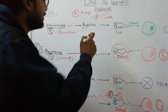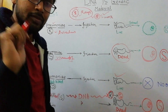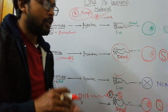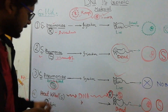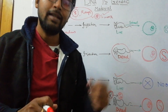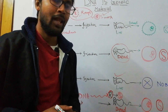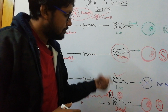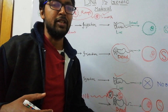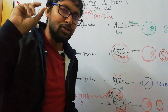Now the twist: he mixed a solution of live R bacteria — rough R bacteria that are not able to create any problem in mice — together with heat-killed S bacteria. These two bacteria were mixed together. The heat-killed bacteria are not able to create any problem, so this mixture logically should not be able to kill any mice, because it contains dead smooth S bacteria and live rough R bacteria.